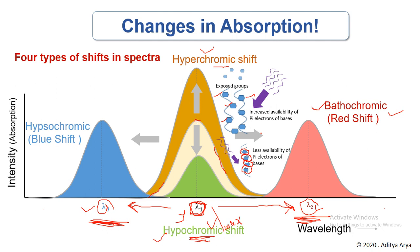These kinds of shifts are very important in analyzing the dynamics of nucleic acids. The calculation of melting temperature and observing whether denaturation has taken place completely or not can be done with the help of spectrophotometry by observing these two kinds of shifts.